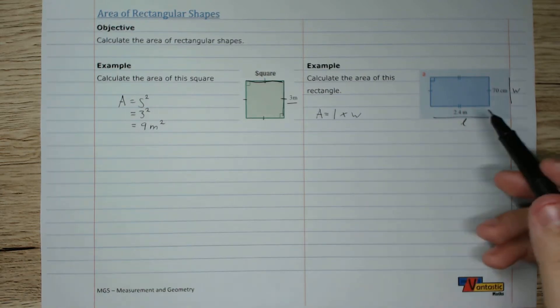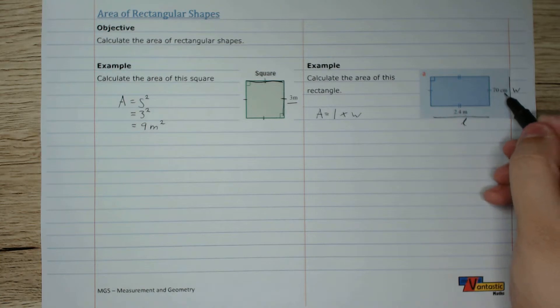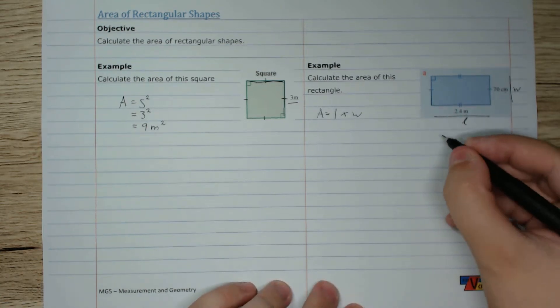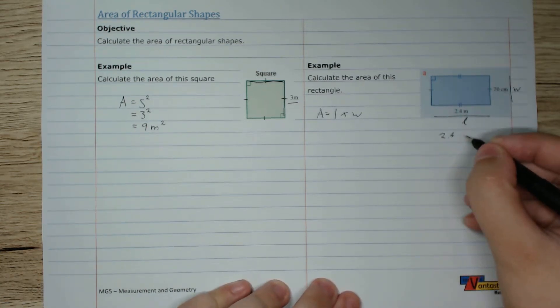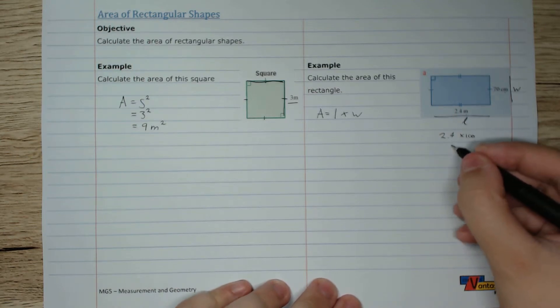But you'll notice in our problem here we have meters, we have centimeters, and that just won't do. So let's convert the 2.4 meters into centimeters by multiplying by 100. So that is 240 centimeters.